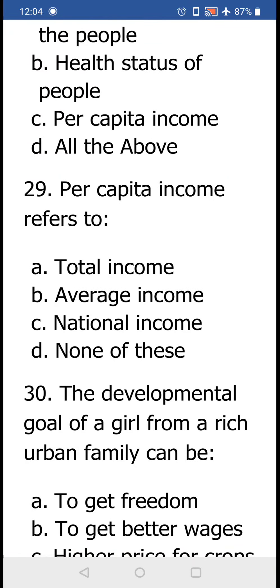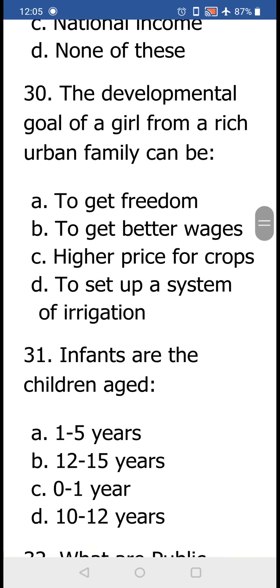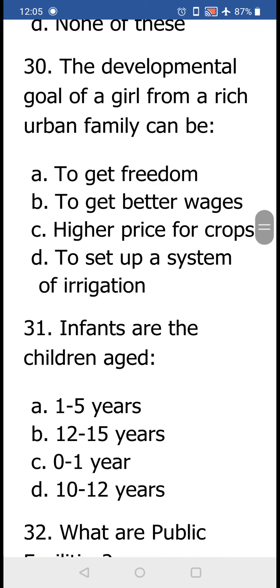The next question: per capita income refers to (a) total income, (b) average income, (c) national income, and (d) none of these. The answer is (b) average income. It is not national income or total income because national income is the sum total of all income, which is also known as total income. Since option (b) is correct, option (d) none of these is also not correct.